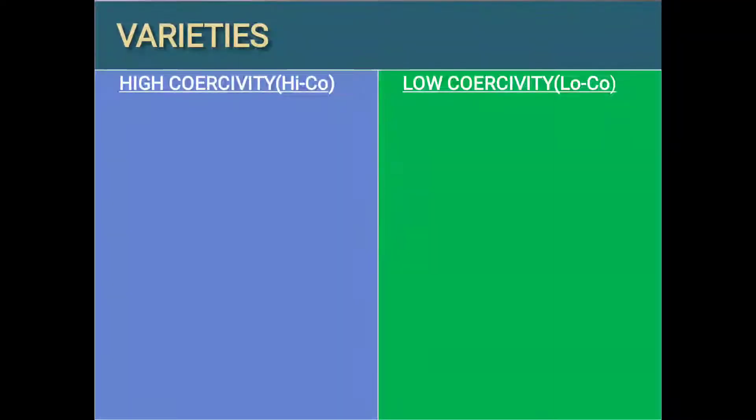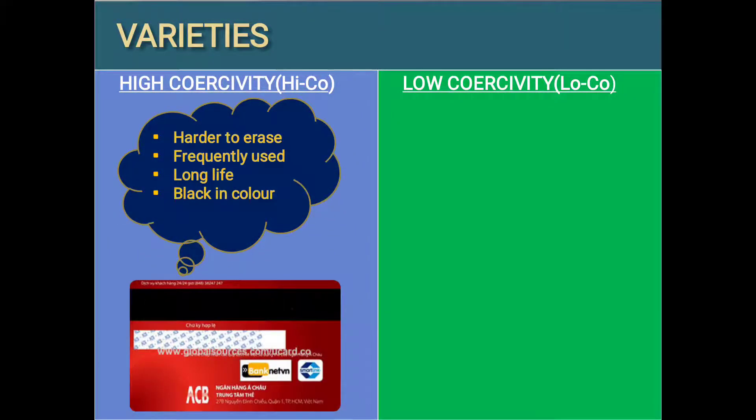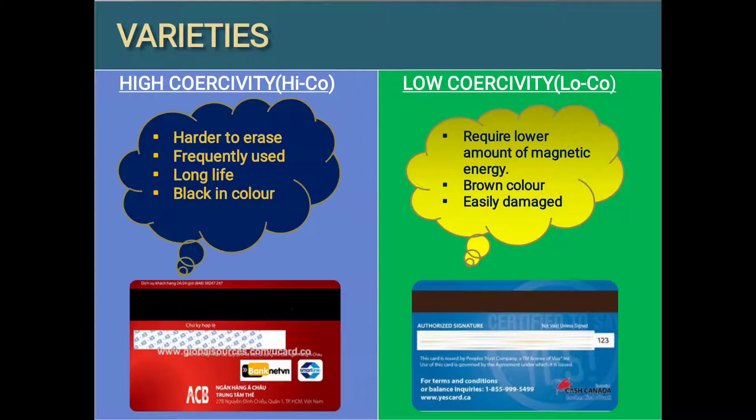The varieties of magnetic strip are shown in the table below. There are two types. Number 1 is high coercivity. The strip of high coercivity is harder to erase. It is frequently used. It has long life, and it is black in color. Number 2 is low coercivity. The strip of low coercivity requires lower amount of magnetic energy. It is brown in color. It can easily be damaged.